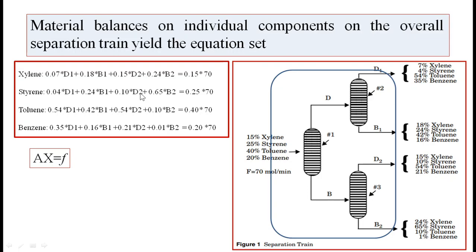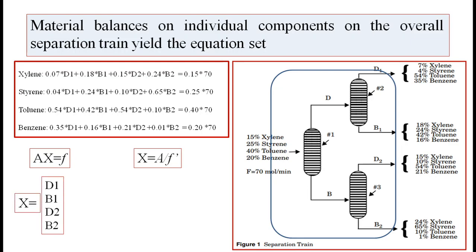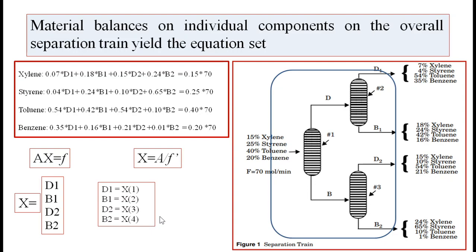By applying matrix operations, we can write these equations in matrix form. A is the composition matrix, x is the unknowns vector for D1, B1, D2, B2, and F is the right-hand side column matrix. We can then solve the unknown matrix x using this matrix operation. After that we get x in terms of D1, B1, D2, B2 and assign them as D1=x(1), B1=x(2), D2=x(3), and B2=x(4) in the MATLAB program.